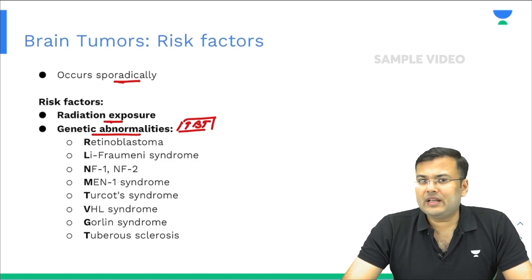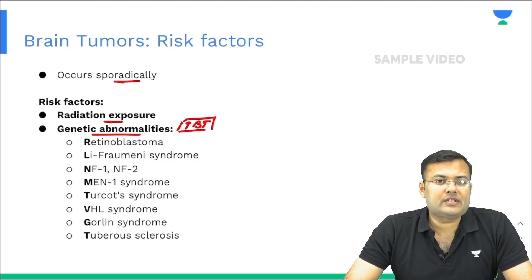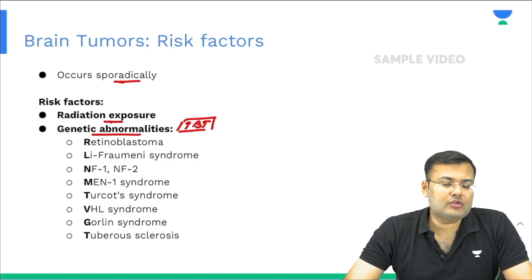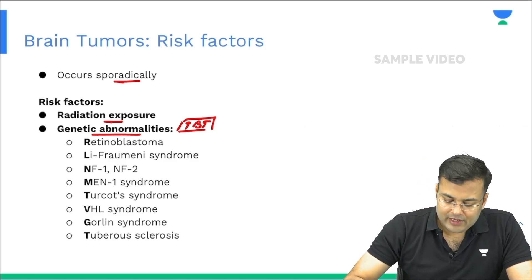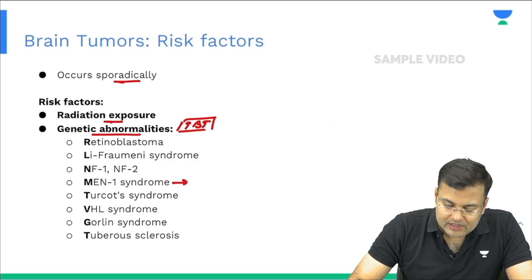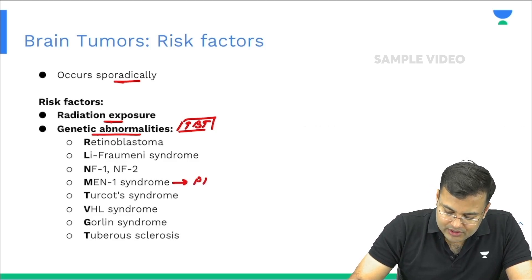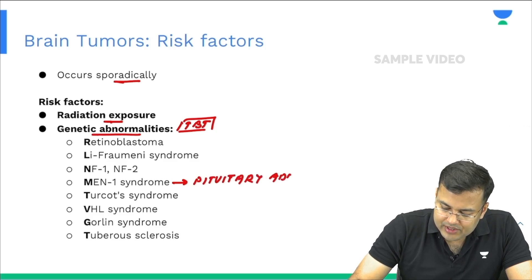The genetic abnormalities with increased risk of brain tumor include: first, retinoblastoma; second, Li-Fraumeni syndrome; third, neurofibromatosis — both NF1 and NF2. Next is MEN1 syndrome, which is associated with pituitary adenoma.